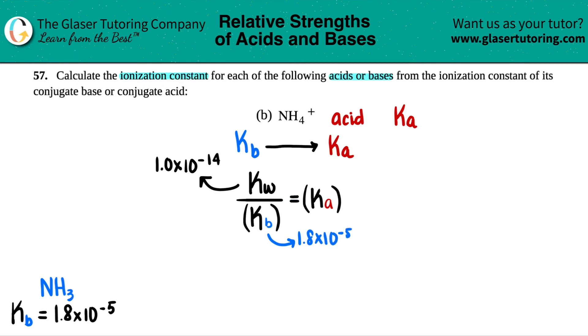So Ka equals something divided by something. 1.0 times 10 to the negative 14th. And then the base was 1.8 times 10 to the negative 5th.